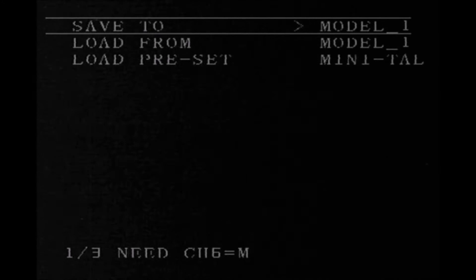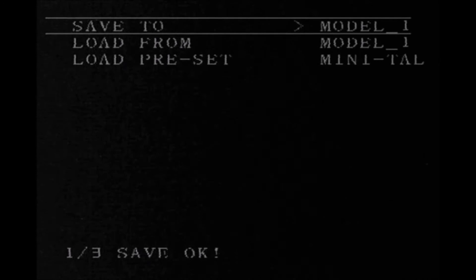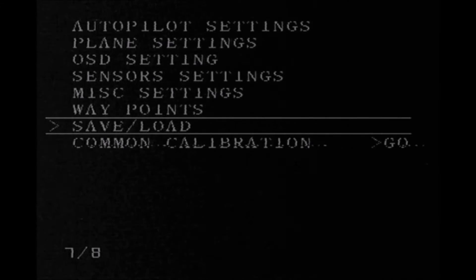It's telling me there I need to put channel six into the middle so now it's in the middle it will save. So I put that back down and come back to the front menu and press channel five down to the lowest value to come out of the menu.